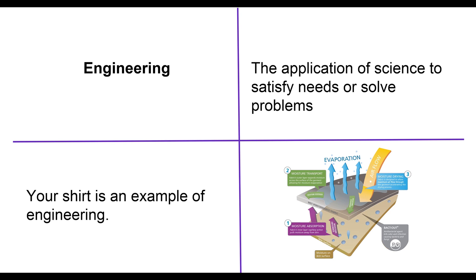An example of engineering is your shirt — that's why I like to use this example, because it's one you don't typically think about. Really, anything you see in your day-to-day life is a product of engineering; someone had to engineer it. I have an image showing what moisture-wicking fabric looks like — it has multiple layers that do different things. There's a lot more work and engineering going into that fabric than you might think.